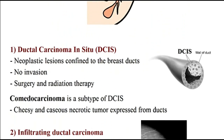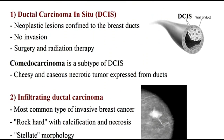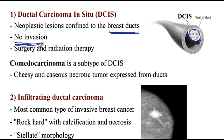Moving on to malignant tumors of the breast — the first is ductal carcinoma in situ (DCIS). Here the ductal carcinoma in situ has not yet invaded the myoepithelial cells or basement membrane. It is a neoplastic lesion confined to the breast ducts with no invasion, and it is recommended that these patients undergo surgery and receive radiation therapy.